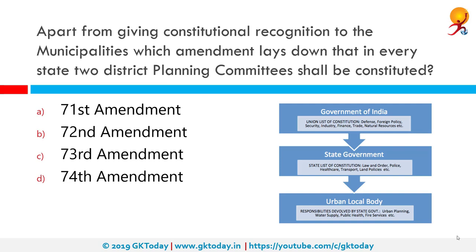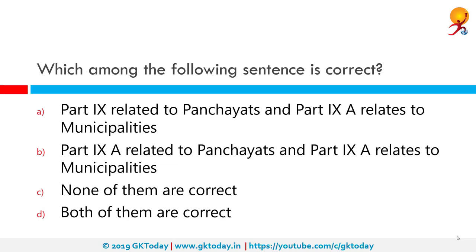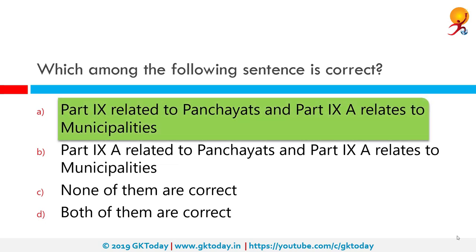Apart from giving constitutional recognition to municipalities, which amendment lays down that in every state two district planning committees shall be constituted? The correct answer is the 74th Amendment. The Constitution (74th Amendment) Act 1992 introduced a new Part 9A into the constitution dealing with municipalities in Articles 243P to 243ZG. This amendment, also known as the Nagarpalika Act, came into force on 1st June 1993.